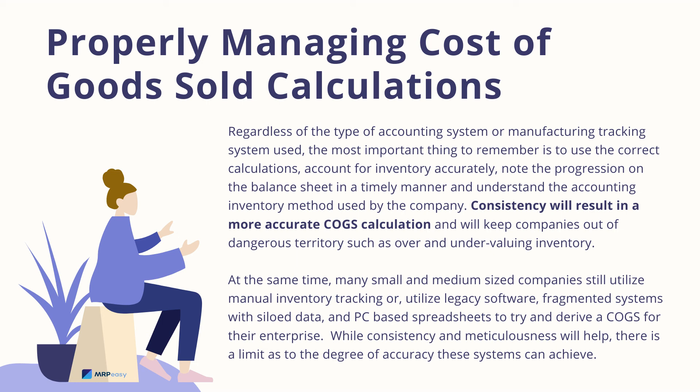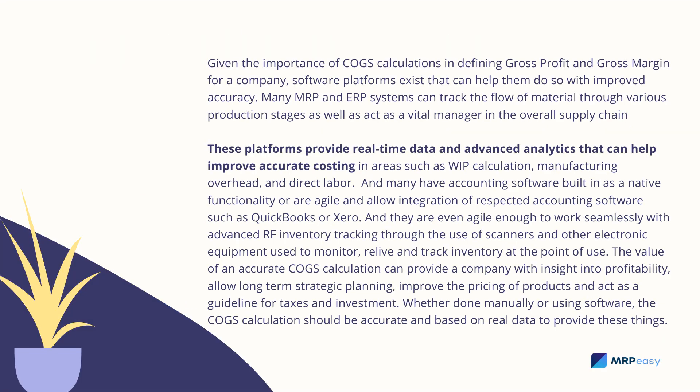At the same time, many small and medium-sized companies still utilize manual inventory tracking or legacy software, fragmented systems with siloed data, and PC-based spreadsheets to try and derive a COGS for their enterprise. While consistency and meticulousness will help, there is a limit to the degree of accuracy these systems can achieve. Given the importance of COGS calculations in defining gross profit, software platforms exist that can help with improved accuracy.